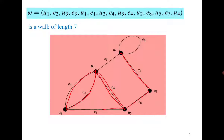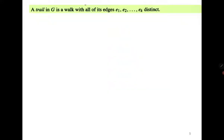Here u2 got repeated, and u3 got repeated. Edges got repeated — e4 got repeated. So if repetition of edges is not allowed, then a walk is called a trail. A trail is a walk with all of its edges distinct.